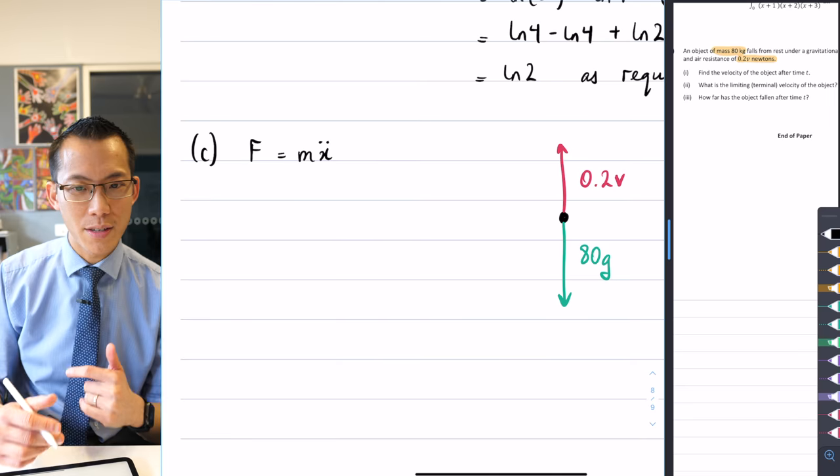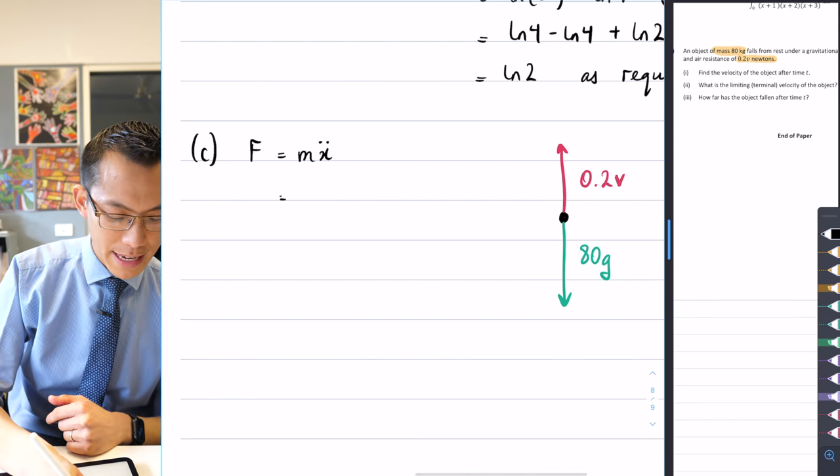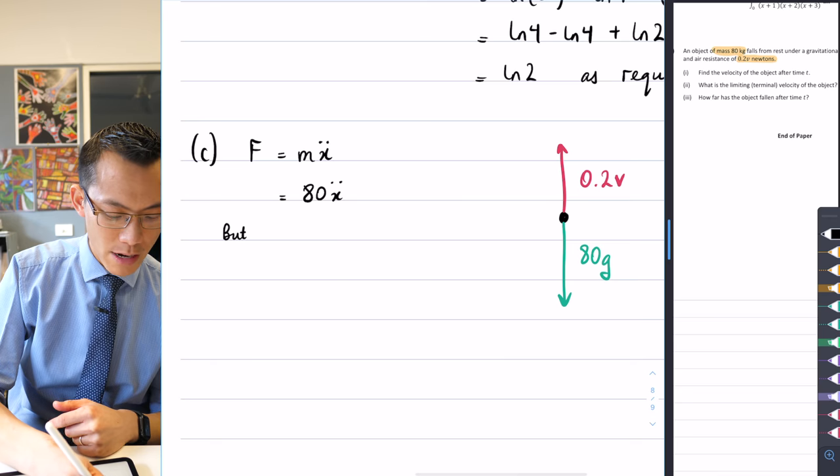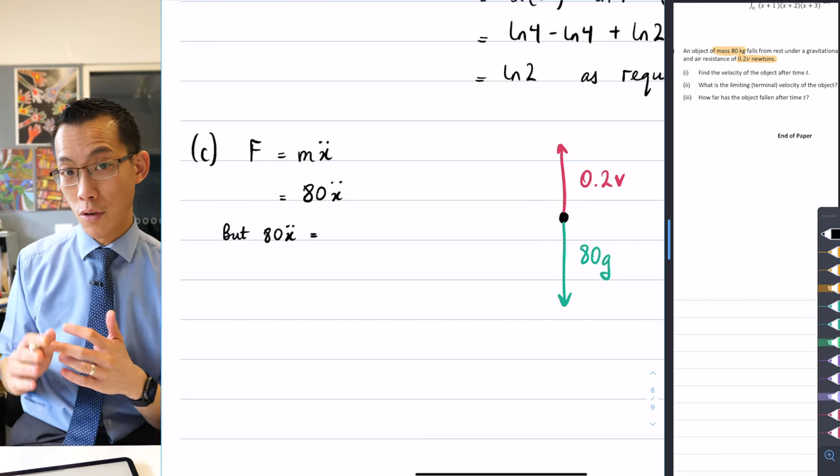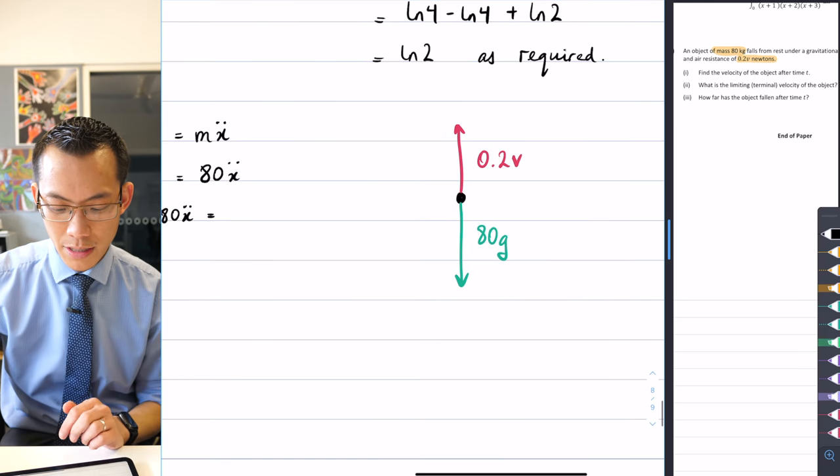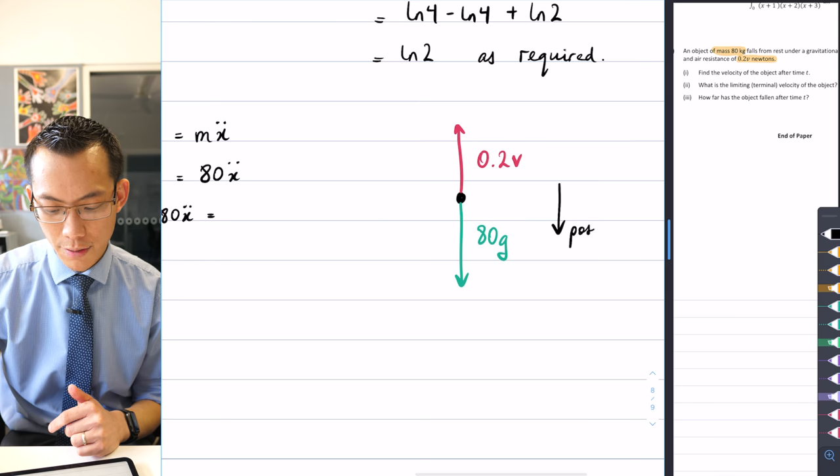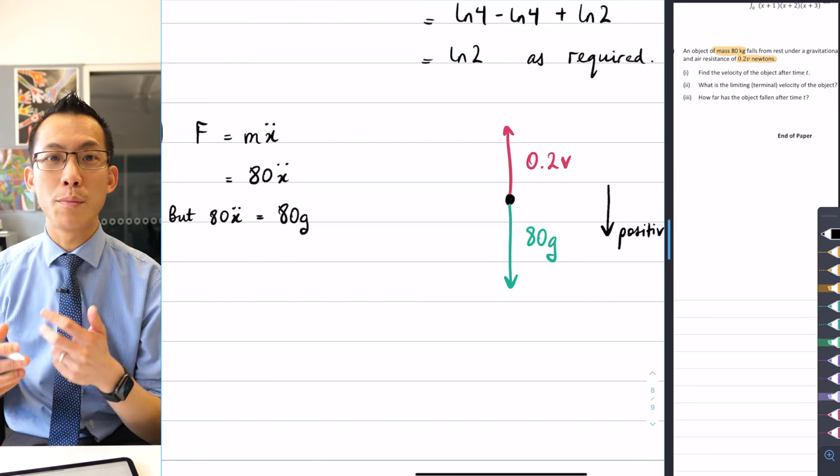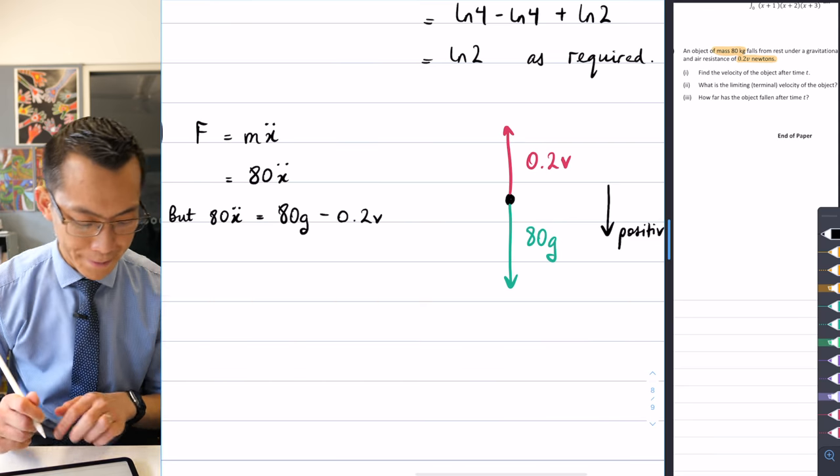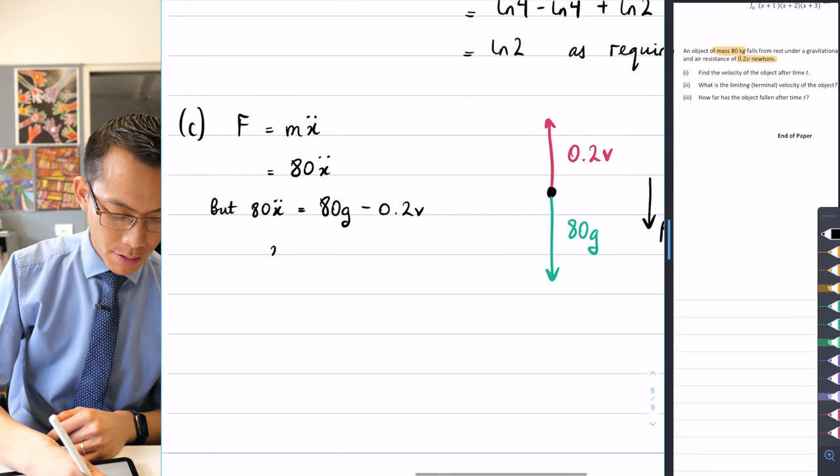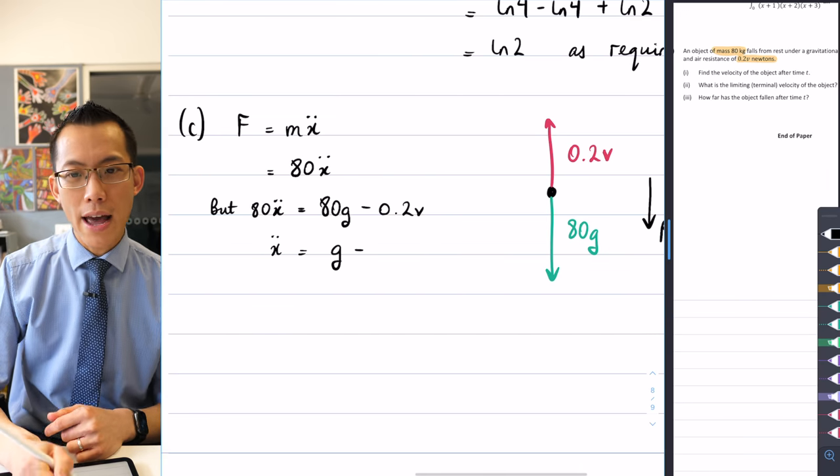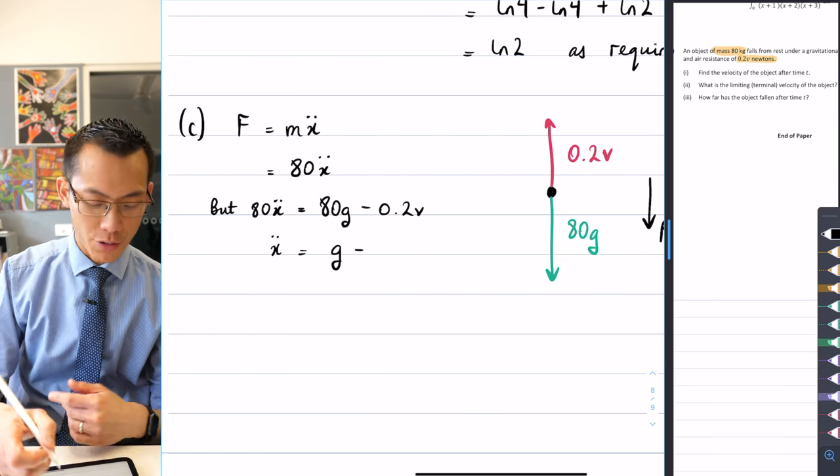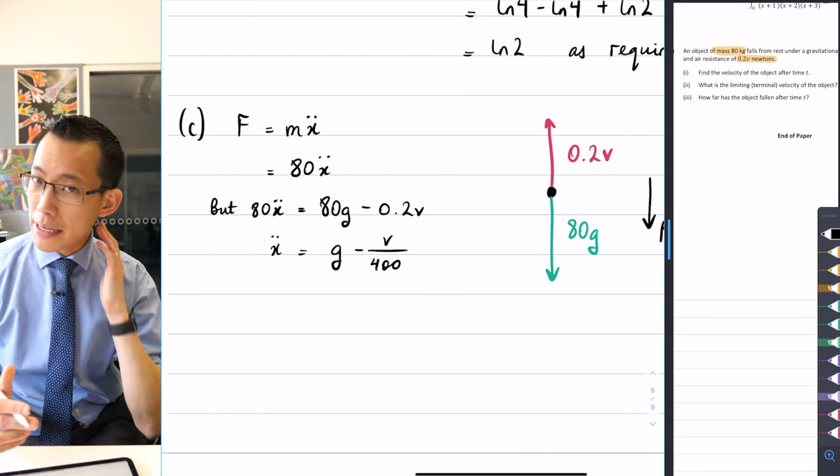So my forces are going to be, because it's mass times acceleration, I can say that's 80 times the acceleration, but my acceleration is in turn going to be equal to the two accelerations from gravity and from air resistance, noting which one is positive. So this is a downward journey, so I'm going to call downward as positive. That means that the 80g will be positive, and then the air resistance, the 0.2v will be negative, so I get minus 0.2v. And I can divide through to get an acceleration equation, so that just gives me g minus v over 400.